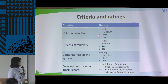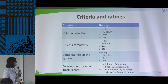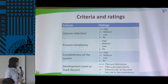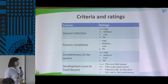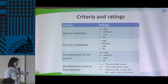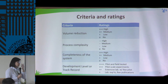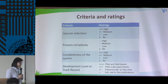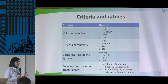Volume reduction — if it can reduce volume effectively. Process complexity — we don't want it to be complicated, especially if we're deploying it to a family; it should be easy to understand.